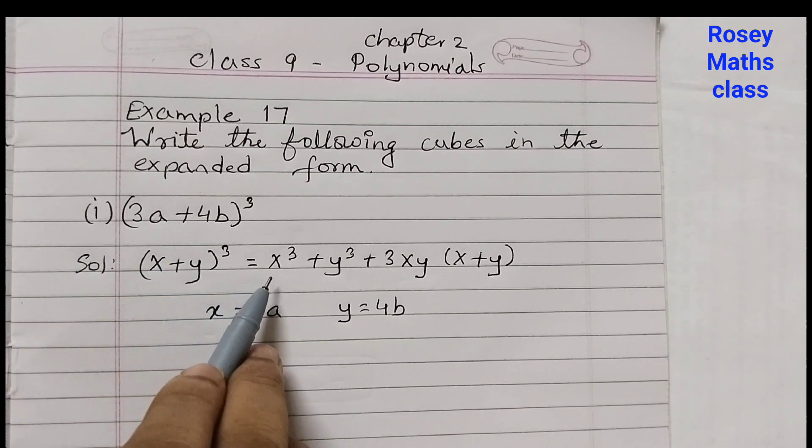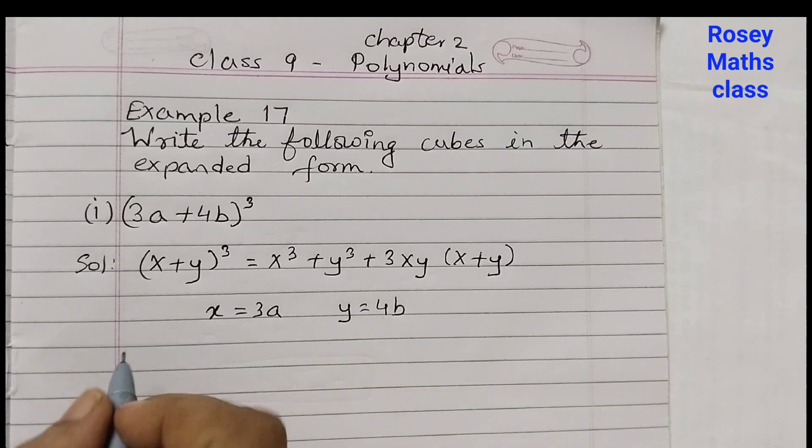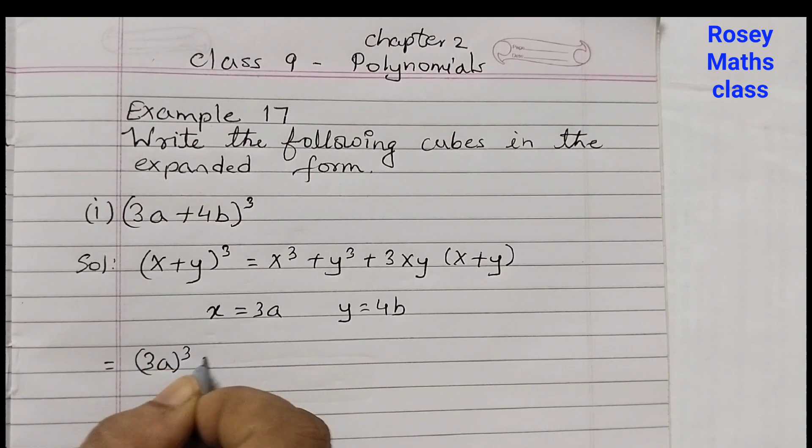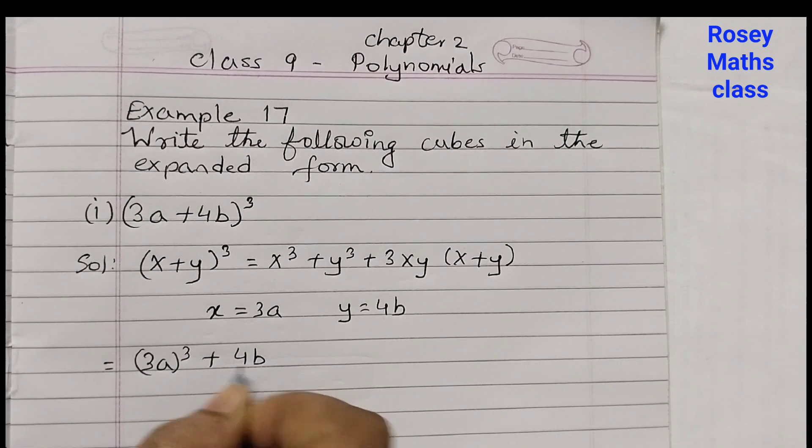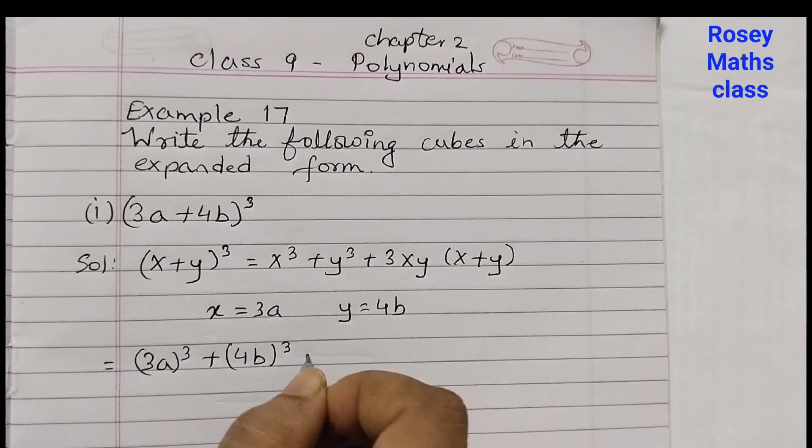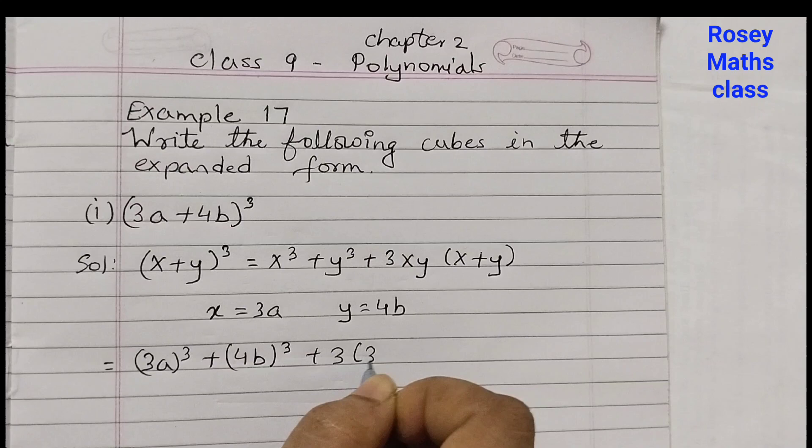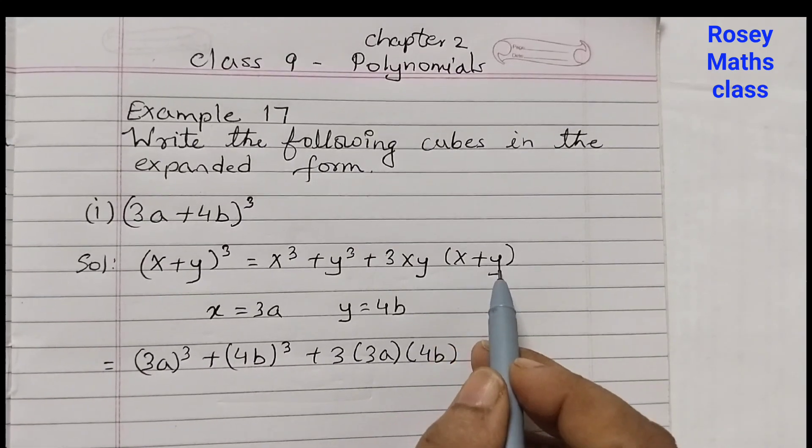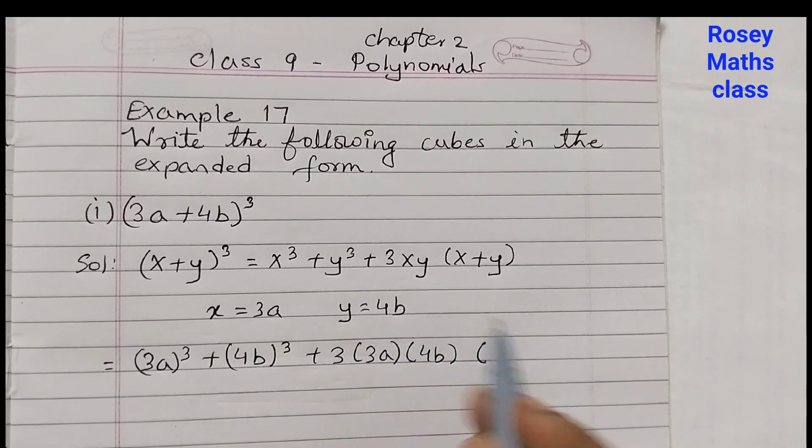Now, we are going to replace x and y with these values. So that equals to (3a)³ + (4b)³ + 3(3a)(4b)(3a + 4b).